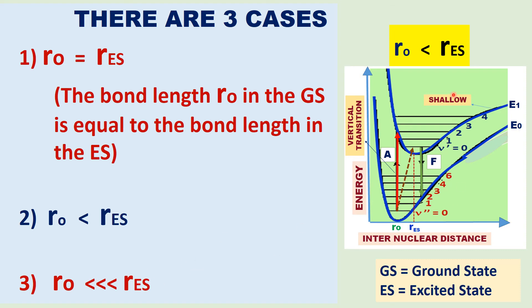For further cases, E2 will be less deep and E3 less deep still — very shallow. The equilibrium bond length for the excited state is very much greater than the equilibrium bond length in the ground state.